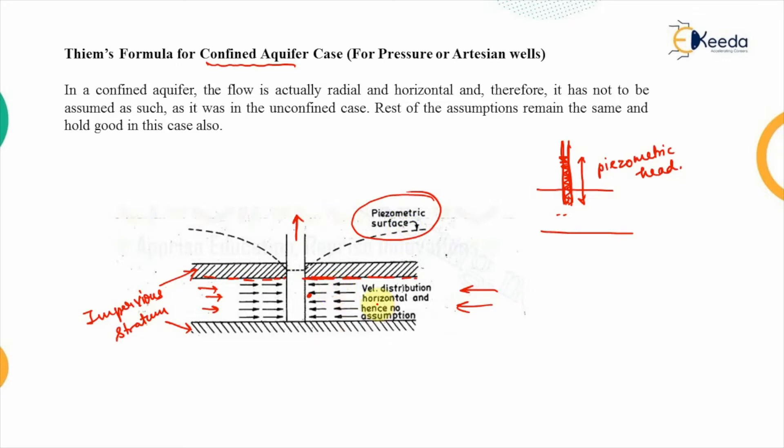Now, as you can see here, in this case, the velocity distribution is already horizontal, all the velocity components, they are radial and horizontal actually. Therefore, we do not need to assume anything like that, as we were doing in the case of unconfined aquifer, but rest of the assumption that will remain the same and they also hold good in this case.